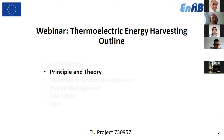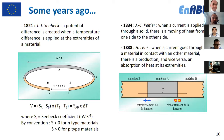Now I will present some principles and theory of thermoelectrics, starting with history. The first thermoelectric effect was discovered 200 years ago by Seebeck, who discovered that a potential difference is created when a temperature difference is applied at the extremities of a material. With two materials at two different temperatures, a potential difference is created that is directly proportional to the temperature difference via a coefficient called the Seebeck coefficient.